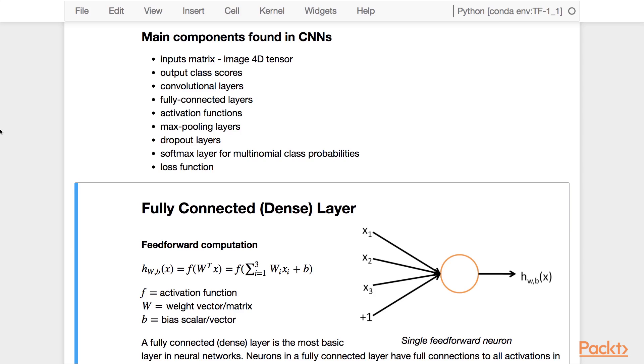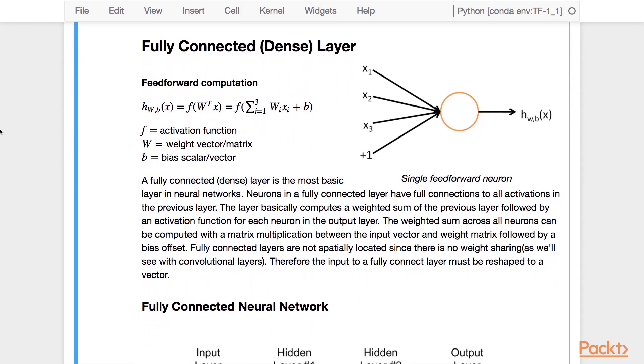As a review, we're going to go over the fully connected layer first before we dive into convolutional layers. A fully connected dense layer is the most basic layer in neural networks. Neurons in a fully connected layer have full connections to all the activations in the previous layer. The layer basically computes a weighted sum of the previous layer, followed by an activation function for each neuron in the output layer.